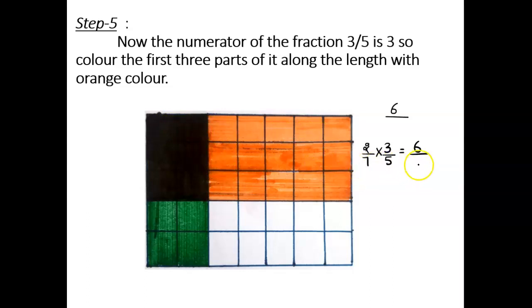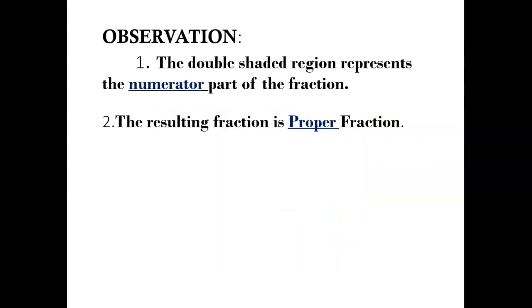Here, the total number of boxes are 35, so we get 6 upon 35. Observation: The double shaded region represents the numerator part of the fraction, and the resulting fraction is a proper fraction.